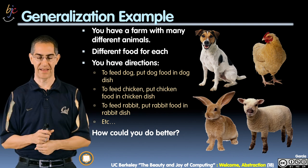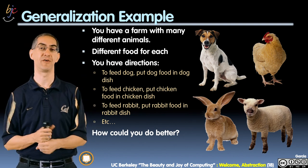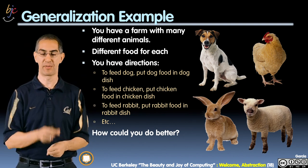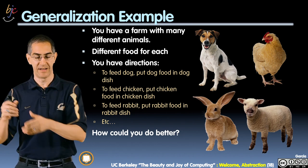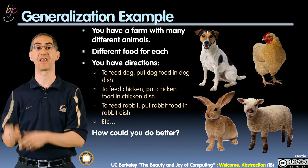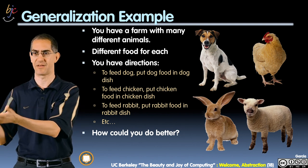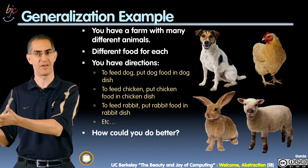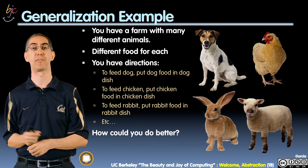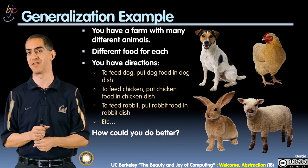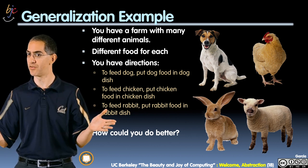You go to the animal notes and it says: to feed the dog, put the dog food in the dog dish. And there's another set of notes that says: to feed the chicken, put the chicken food in the chicken dish. And another one: to feed the rabbit, put the rabbit food in the rabbit dish. You keep doing this and realize they're all the same note.